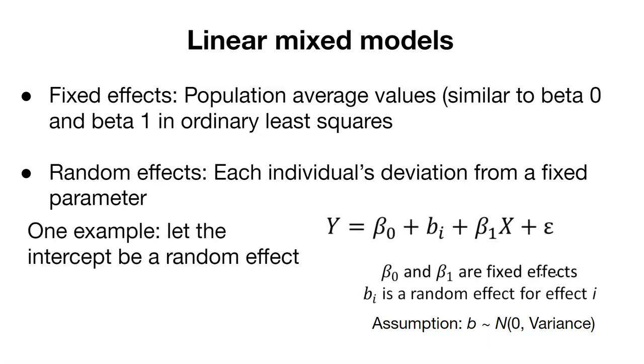One example is to let the intercept in a regression model be a random effect. And so that might look something like this. Note that this looks very similar to our simple linear regression. But now we have little b sub i. Little b sub i is our random effect for effect i. Now i can be anything that might be found in our data. It could be any subject that we're interested in. So we can then consider the beta 0 and the beta 1 values as fixed effects and the little b sub i as the random effect in this linear mixed model. So this random effect is going to differ for each level of i. The big assumption here that we make is that the random effects, b sub i, they're distributed normally with a mean of 0 and some variance associated with them that we might be interested in learning more about.